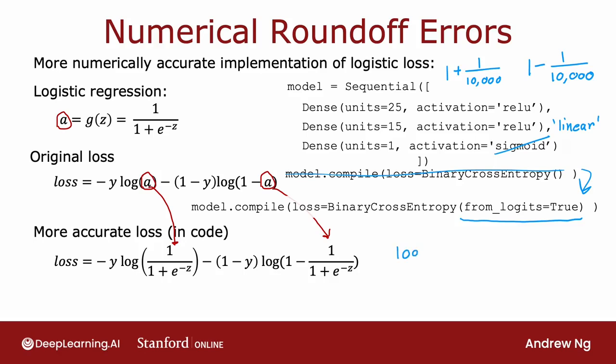In case you're wondering what the logits are, it's basically this number z. TensorFlow will compute z as an intermediate value, but it can rearrange terms to make this become computed more accurately. One downside of this code is it becomes a little bit less legible, but this causes TensorFlow to have a little bit less numerical roundoff error. Now, in the case of logistic regression, either of these implementations actually works okay, but the numerical roundoff errors can get worse when it comes to softmax.